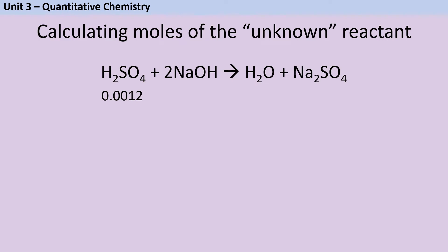Our second step is to use the coefficients in the symbol equation to work out the moles of the second substance. Quite often you won't need to do this step at all because the reaction is between hydrochloric acid and sodium hydroxide with no coefficients. If it's not that reaction, it's likely sulfuric acid giving a one-to-two ratio. So for every one mole of sulfuric acid I need two moles of sodium hydroxide. If I have 0.0012 moles of sulfuric acid, I double that to get 0.0024 moles of sodium hydroxide.